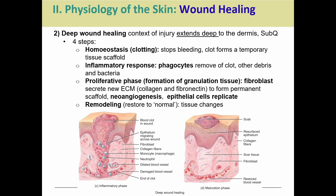Then remodeling occurs — we try to remodel the tissue as close to normal as possible, though it's not always perfect. We see the blood clot forming, the stratum basale rebuilding so the epidermis can heal, white blood cells phagocytizing pathogens, fibroblasts building new collagen fibers, and damaged blood vessels being repaired and reformed. What we're left with is a little scar tissue — we work to get back to normal, but it's never perfect. The more traumatic the wound, the more apparent the scar tissue.